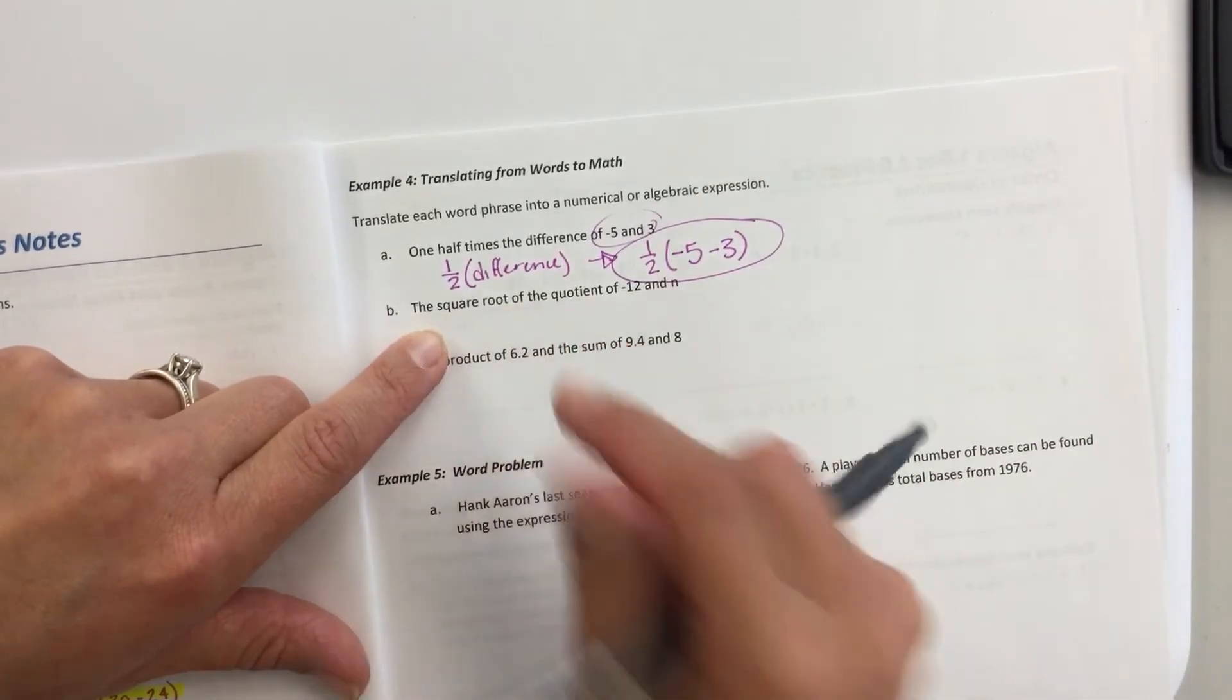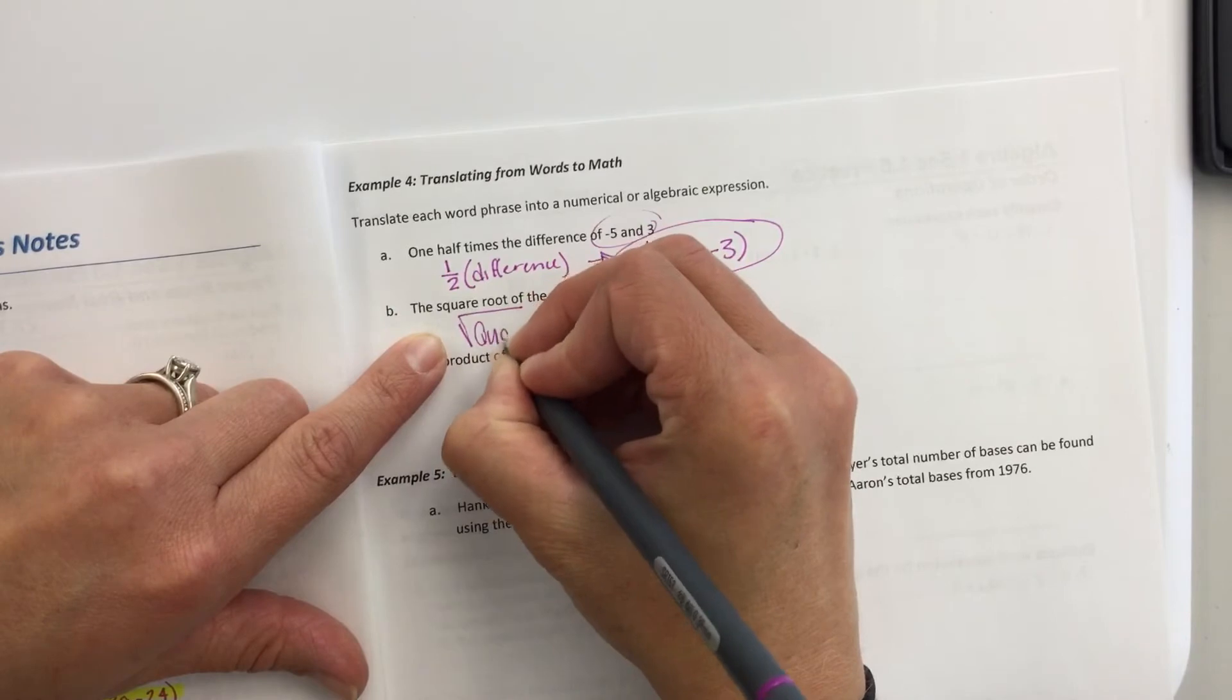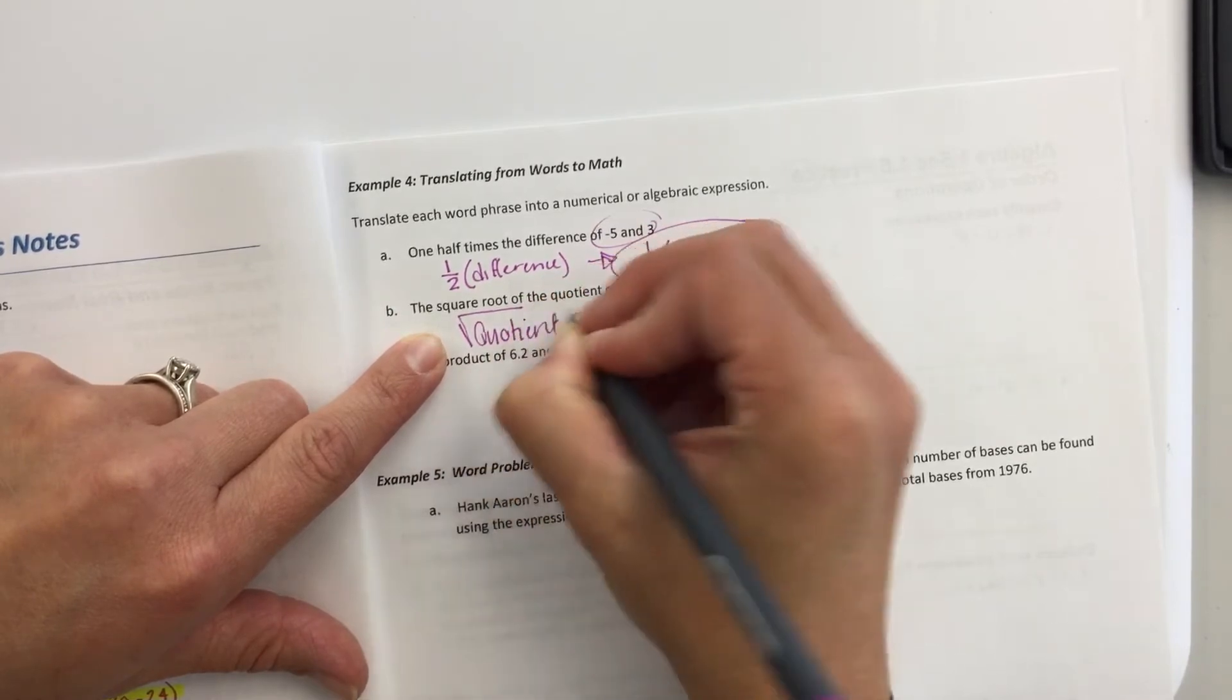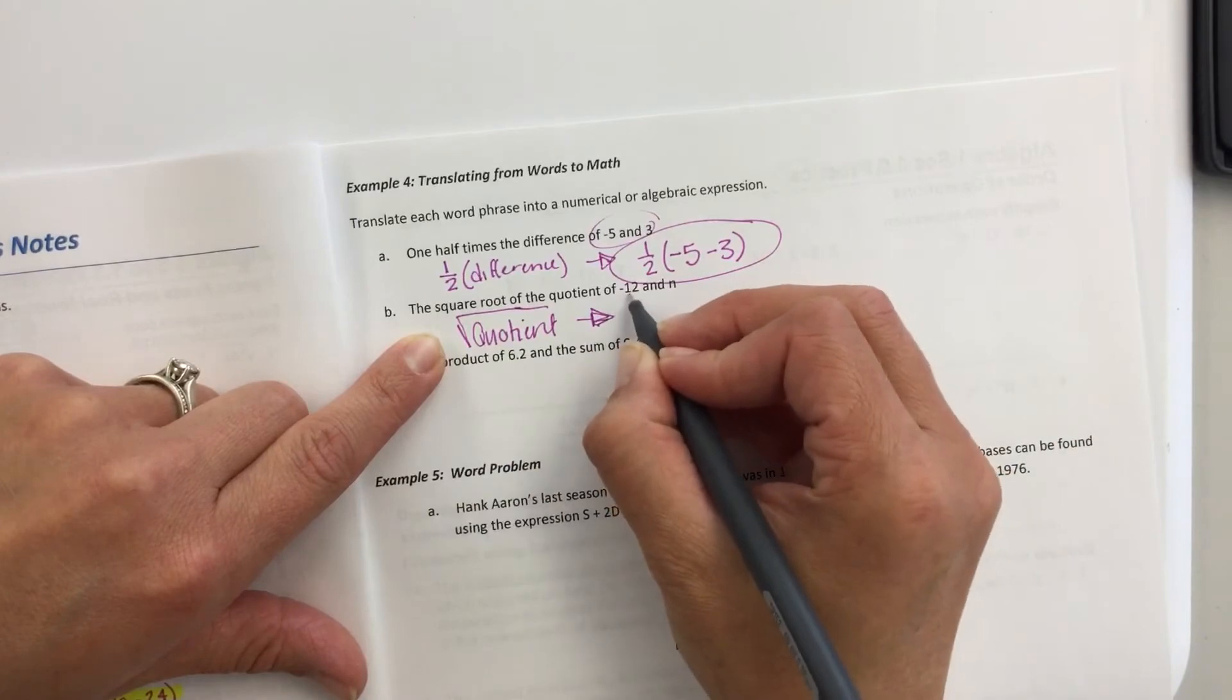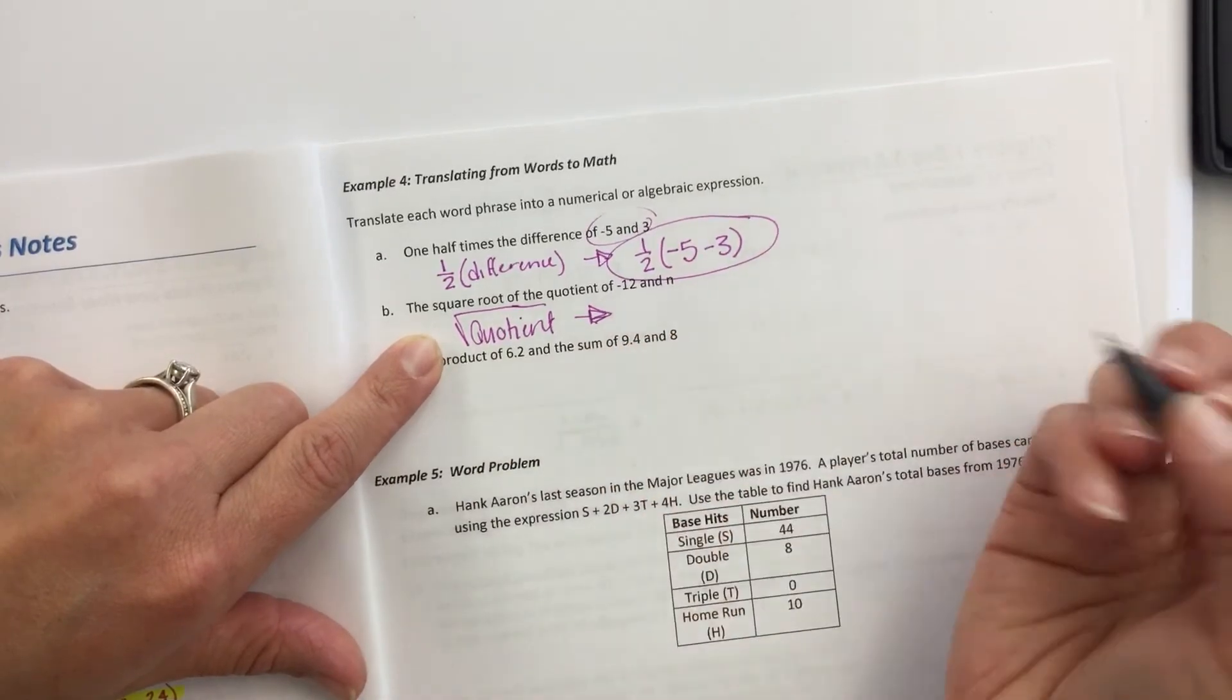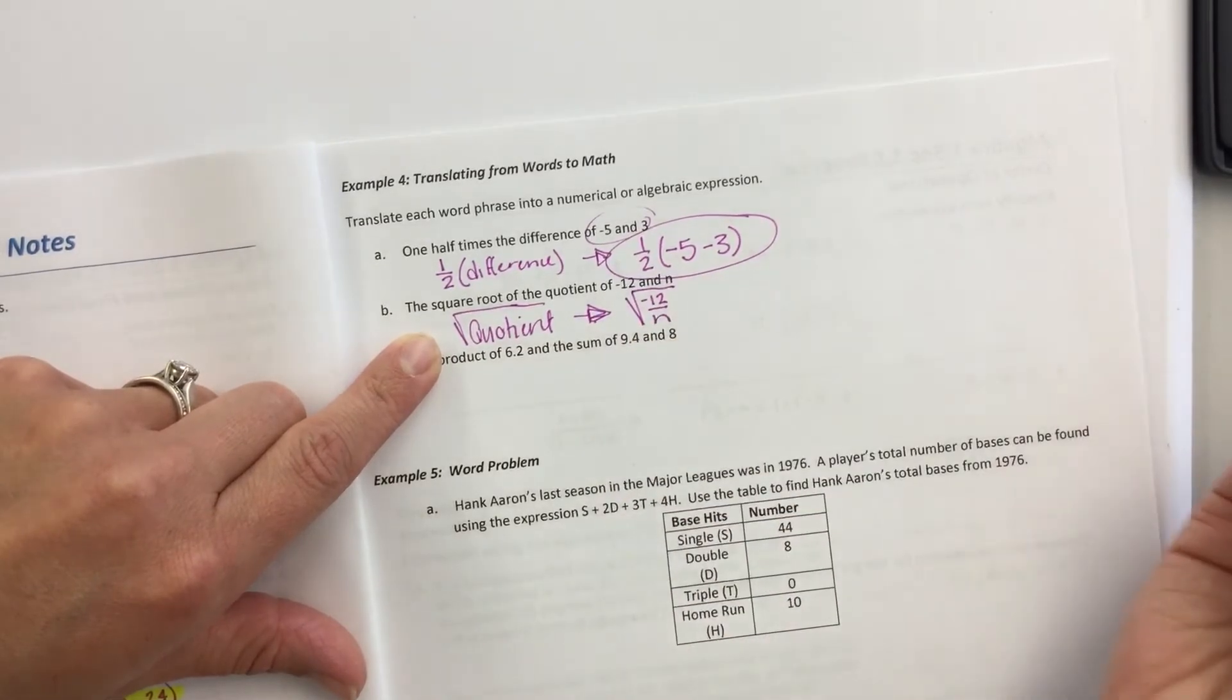The square root of the quotient. So the square root of the quotient. Quotient means division. What are we dividing? We're dividing 12. We're dividing 12. Negative 12 and n. So it's going to be the quotient of negative 12 and n. Like that.